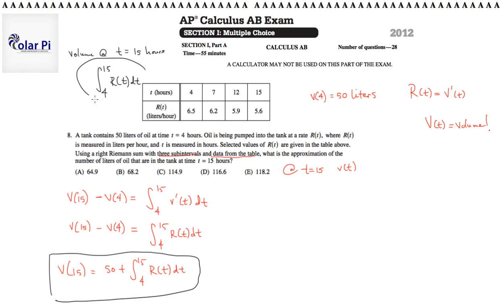Since we want the volume of oil at 15, we must take the change in volume from time t equals 4 to 15 and add on however much we started off with at t equals 4 hours, which was 50 liters. So 50 liters plus the change in volume from 4 to 15 together should get us V(15). Notice that this is identical to what we had before.